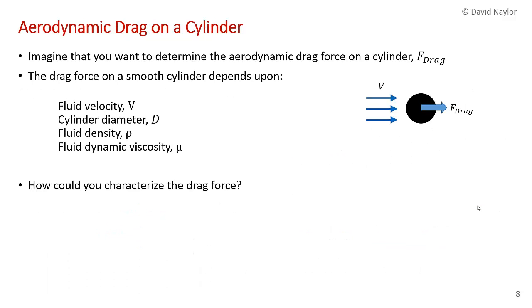The previous example is just a visual example of flow regimes over cylinders, so I want to talk about something more concrete. Imagine if you wanted to determine the aerodynamic drag force on a cylinder—that's important for all kinds of applications. It might not be a cylinder, it might be the drag force on a car, but for this example let's consider a cylinder. The drag force on a smooth cylinder in a flow—we have some fluid flowing of velocity V and we're trying to calculate the drag—it would depend upon the fluid velocity, the size of the cylinder, its diameter, and the fluid properties: density ρ and dynamic viscosity μ.